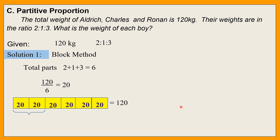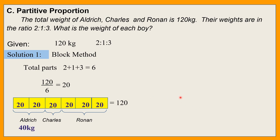Dalawang parts ang para kay Aldrich, isang part ay para kay Charles, and tatlong parts ay para kay Ronan. So ibig sabihin, si Aldrich ay 40 kilograms, si Charles ay 20 kilograms, at si Ronan ay 60 kilograms.